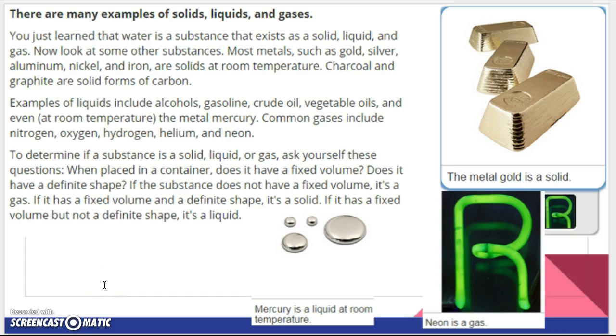There are many examples of solids, liquids, and gases. One of the things we're going to talk about a lot in this class are things that are metals, like gold and silver, aluminum, nickel, iron, and most of them are solid at room temperature. Some non-metals, like charcoal and graphite, which are forms of carbon, are solid. Obviously you know this. Liquids, all kinds of liquids. Mercury is a liquid metal at room temperature, and of course, gases such as neon.